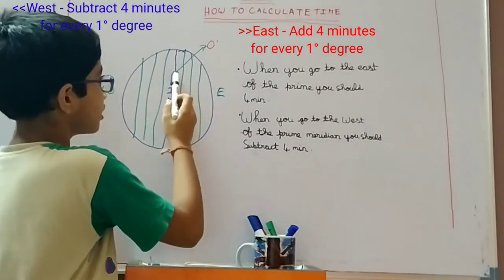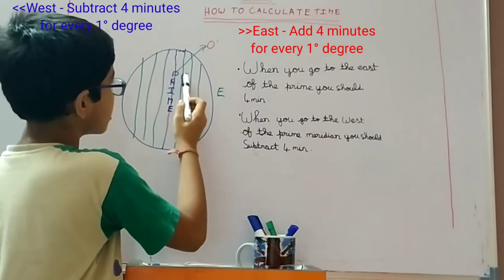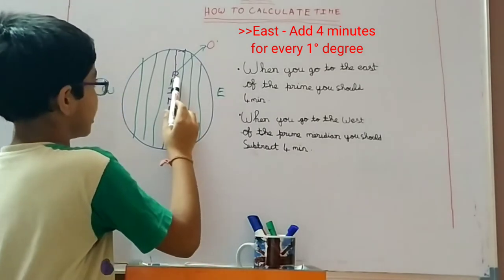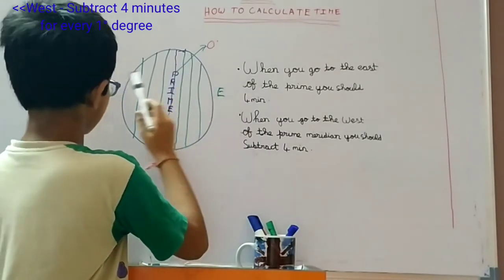In this prime meridian, you should add four minutes and so on. It is zero degrees. So it is east and west.